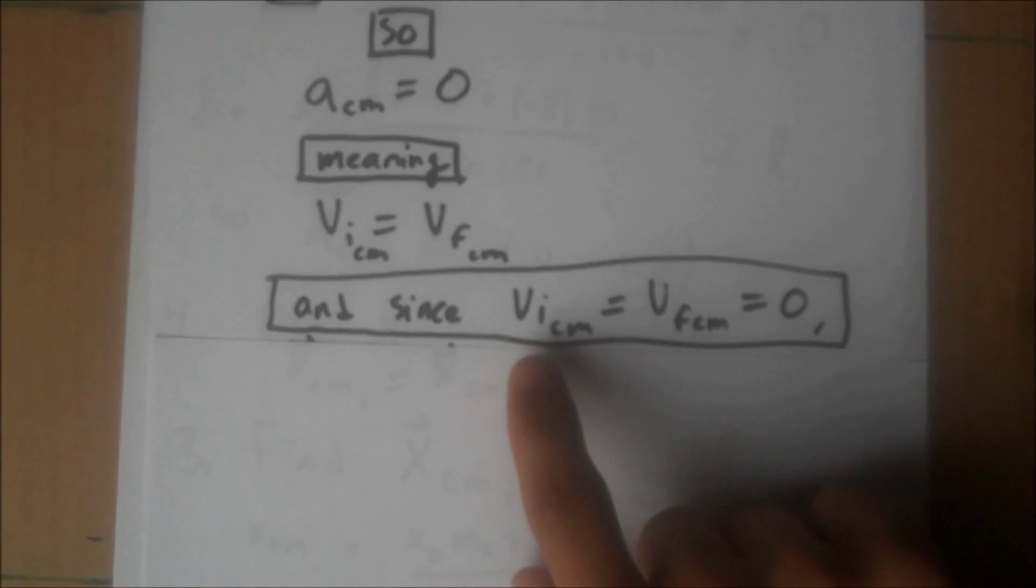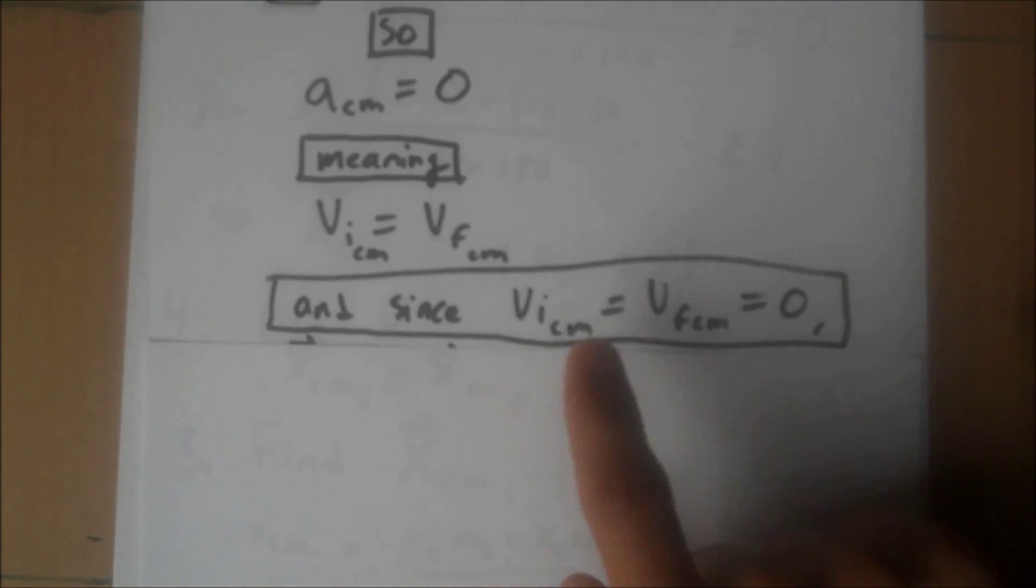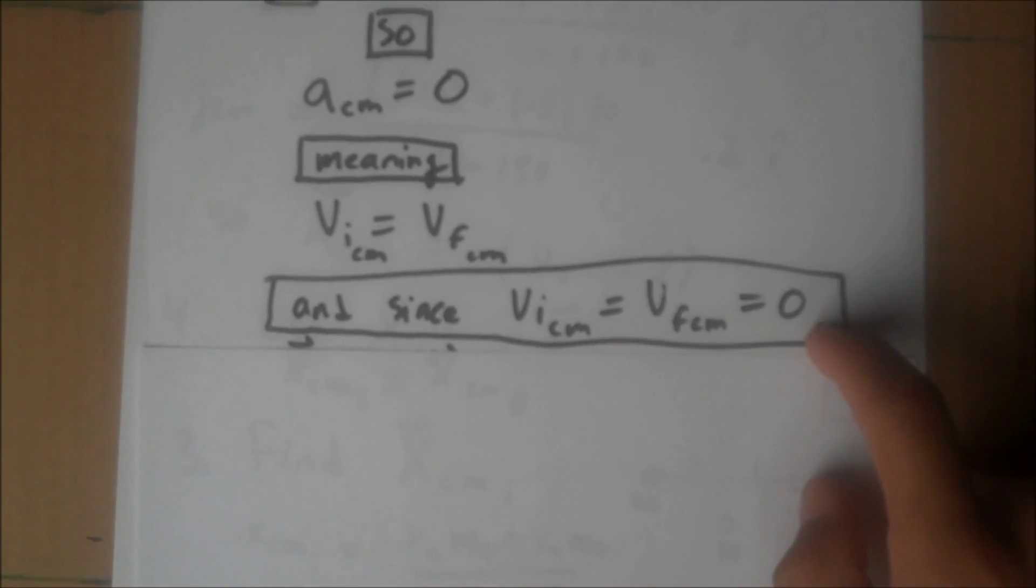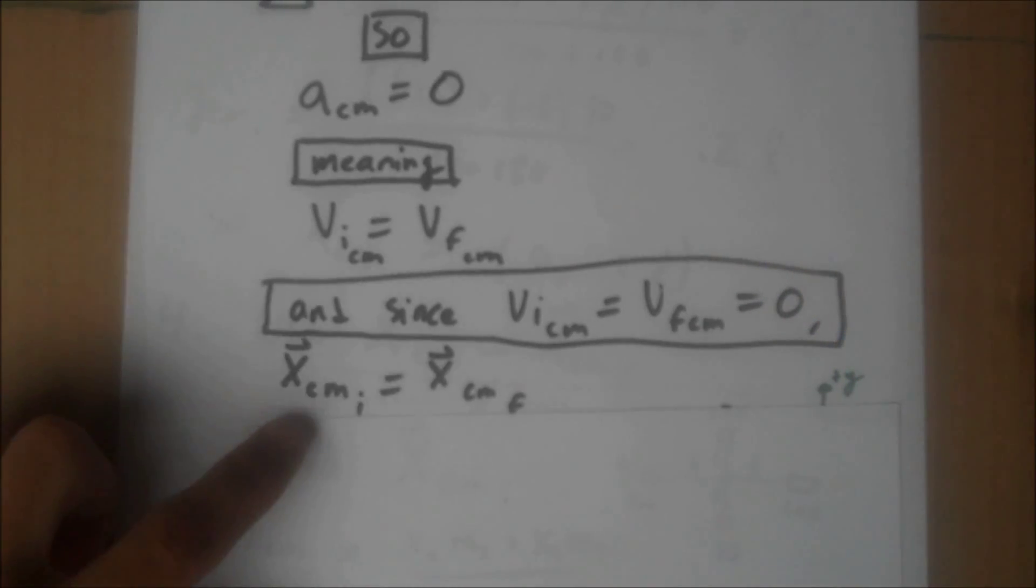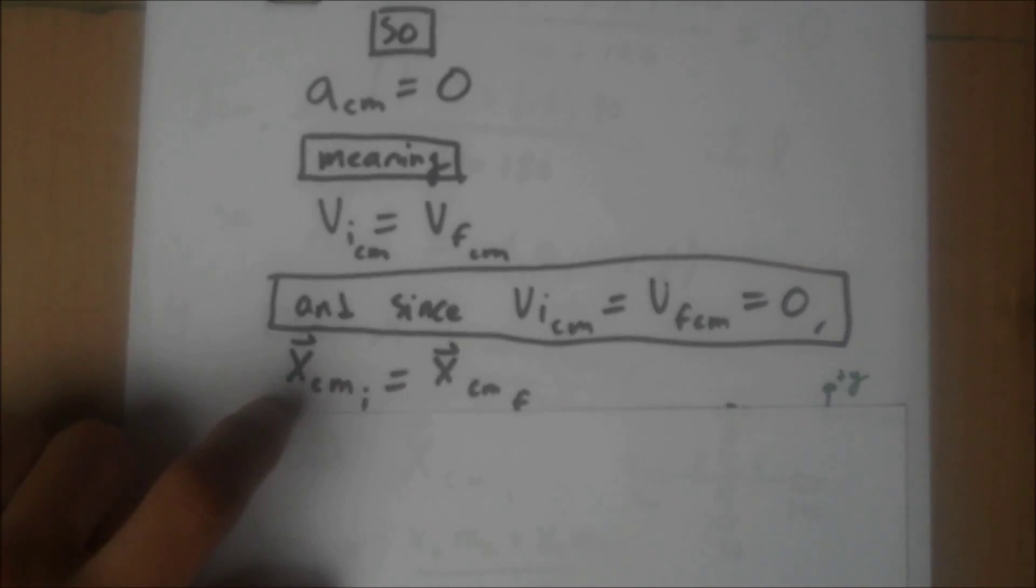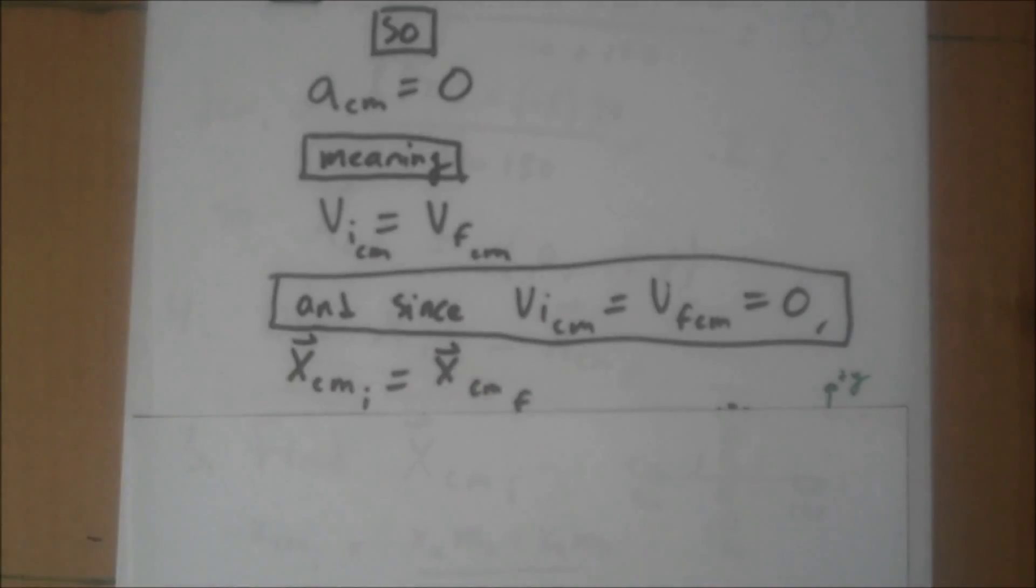The initial velocity of the center of mass has to be the final velocity of the center of mass. Acceleration is zero. And since the initial velocity of the center of mass equals the final velocity of the center of mass equals zero, we know the center of mass has to stay in the same place. The initial center of mass equals the final center of mass. If no forces act on a system, then its center of mass cannot move if you keep your coordinate system centered at the center of mass. It does not move.